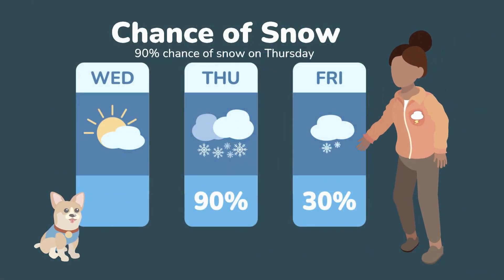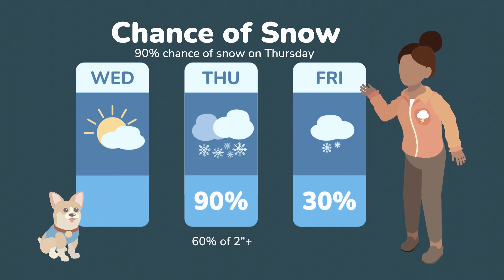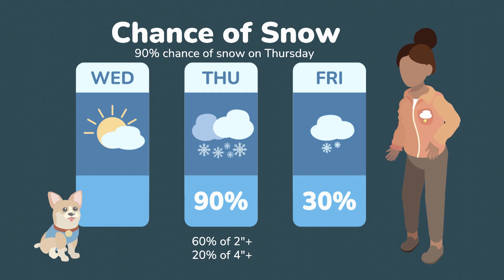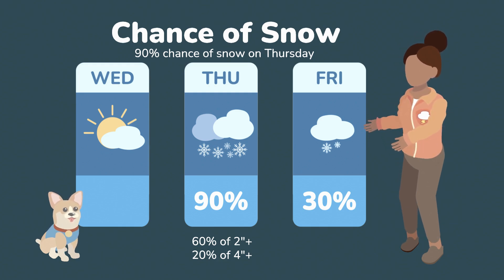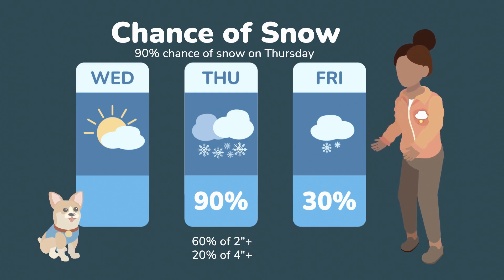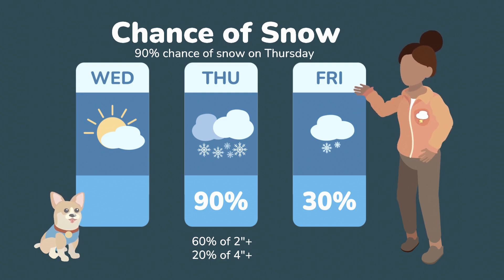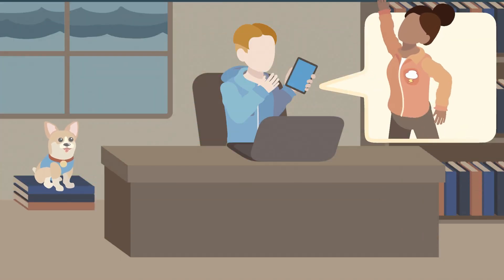Here's an example. On Thursday, there's a 60% chance of at least two inches of snow and a 20% chance of four or more inches. These forecasts include probabilities to give you a view into the range of possible outcomes and the chances of those taking place. Sometimes we refer to them as probabilistic forecasts.